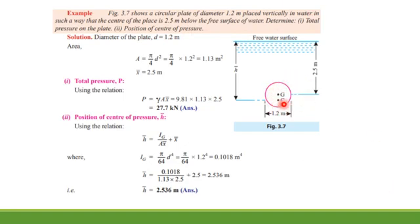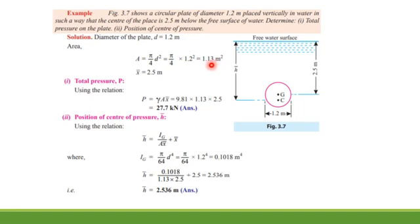This is a circular plate with diameter 1.2 meters. It is a simple question — you just apply the formulas and enter the values. First, we calculate the area: A = (π/4)d² = (π/4)(1.2)² = 1.13 m². Next, x-bar is the distance from the free liquid surface to the center of gravity of the surface, which is given as 2.5 meters.